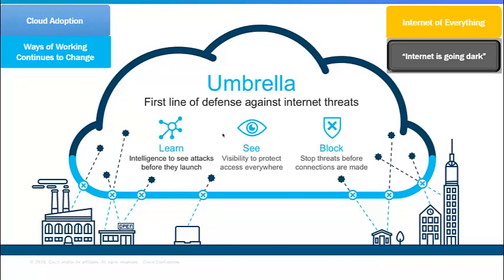With more data being encrypted — the internet going dark — we focus on the front end: looking at the sites themselves, understanding if where people are going is malicious, and making that decision early. It doesn't mean we can't stop malicious activity after a device is compromised — if a device has been taken outside the walled garden or has malware, we can still block the C2 callback (command-and-control callback) to malicious sites.